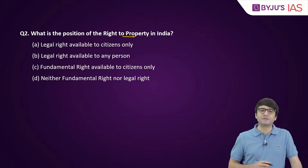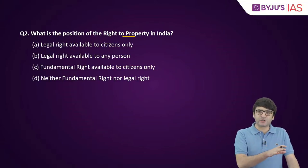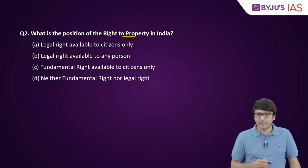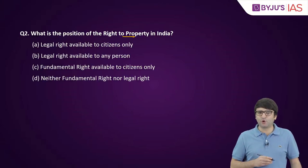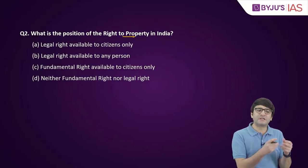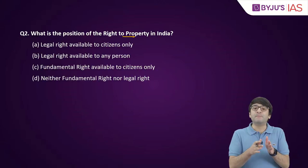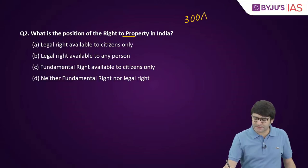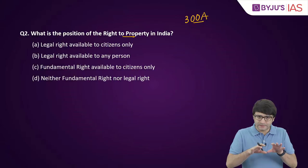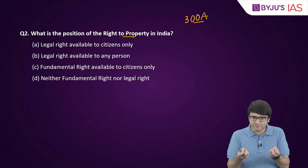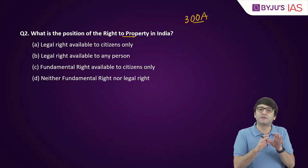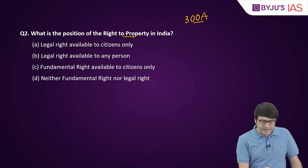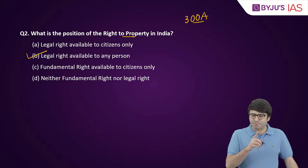Question two: what is the position of the right to property in India? Right to property was initially a fundamental right under Articles 19 and 31. In 1978, the 44th constitutional amendment act deleted it from fundamental rights, but it was made a constitutional right under Article 300A. Since the constitution is the supreme law of the land — a legal document — right to property is a legal right available to any person. So the answer is B.